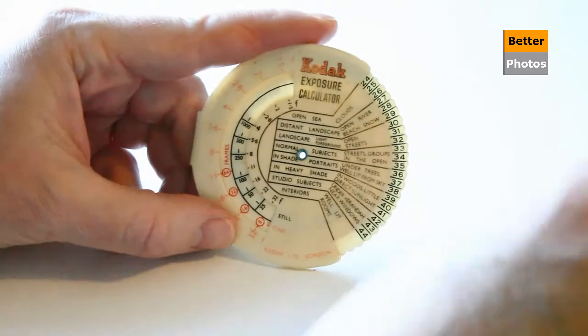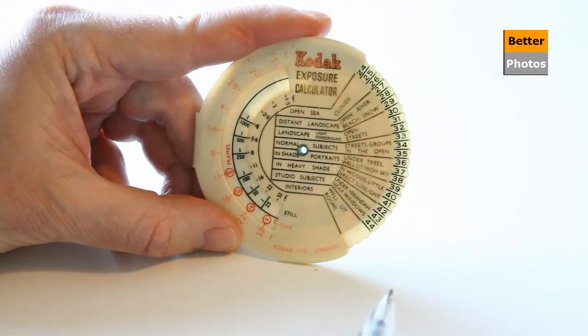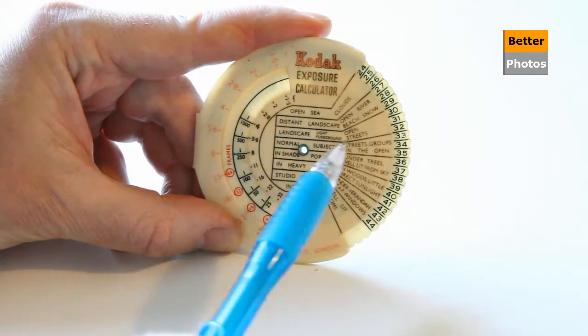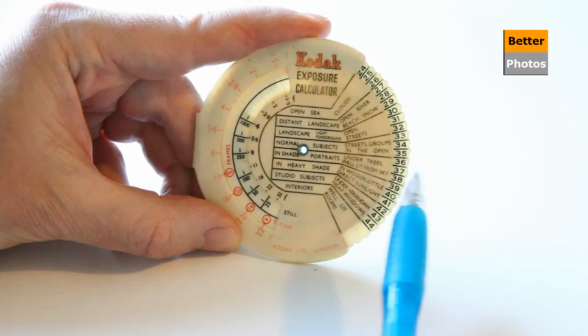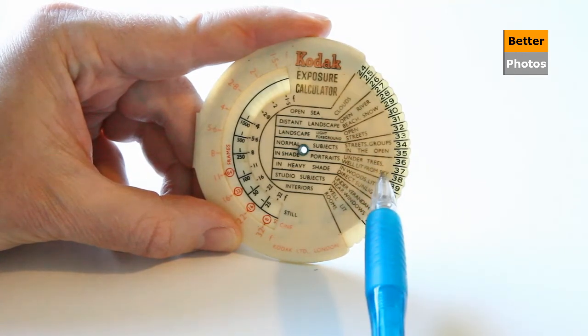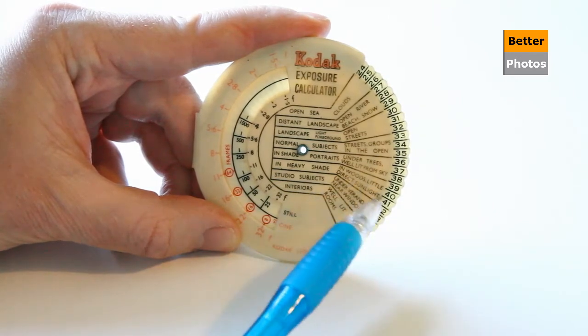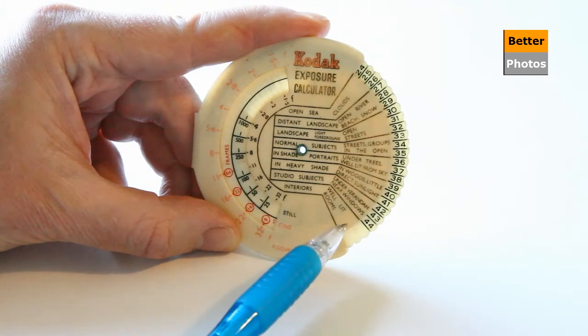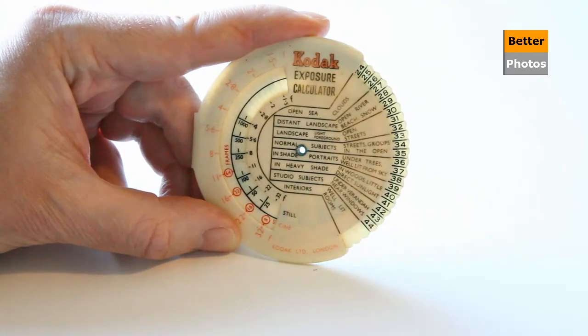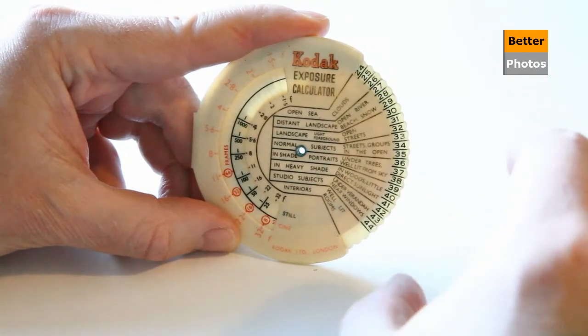And we'll then need to look at the specific subjects and the specific locations they're actually shooting in. So here we've got a whole range of different things from open streets, we've got groups in the open, we've got taking pictures under trees but well lit from the sky, in woodland with very little direct sunlight, under verandas, near windows and in well lit rooms.